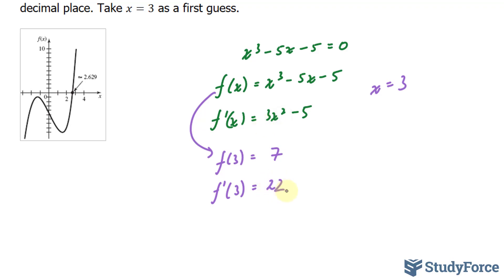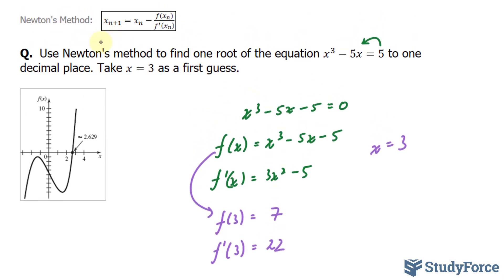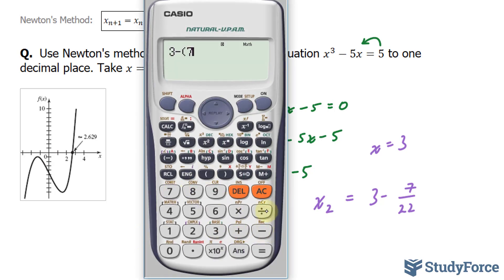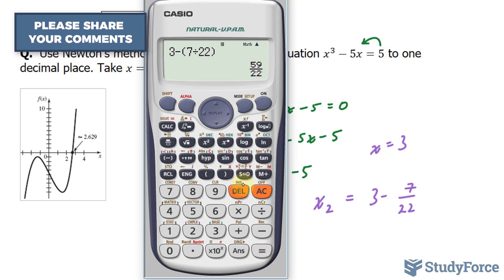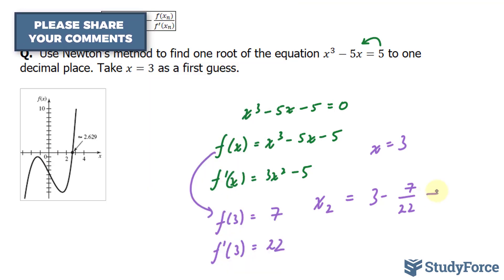And this is where the formula comes into play. Notice that the formula is x subscript n+1 equals x subscript n minus these two. What we have to do is divide what we found for f(3) with f'(3): 7 divided by 22, and take this number and subtract it from x subscript n, your first approximation. 3 minus 7 over 22 equals x subscript 2. Let's find what this is using our calculator. 3 minus 7 over 22 gives us 2.68.